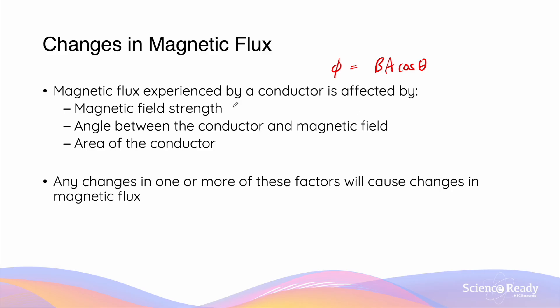The value of flux is affected by the magnetic field strength B, which is sometimes known as the flux density. It is affected by the angle between the conductor and the magnetic field — that's theta — and also the area of the conductor A. To understand Faraday's law of induction, it's important to be familiar with these three factors, because any changes in one or more of them will cause changes in magnetic flux. Changes in magnetic flux is the foundation of how electromagnetic induction works.